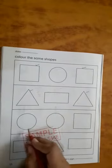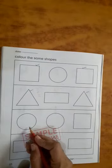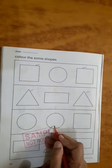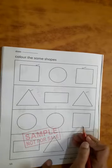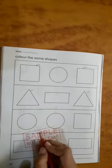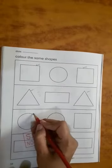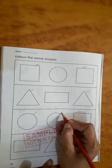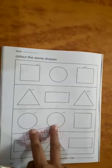Which shape is this? Circle. This? Circle. And this one? Square. So you have to colour the circle shape. These two are same.